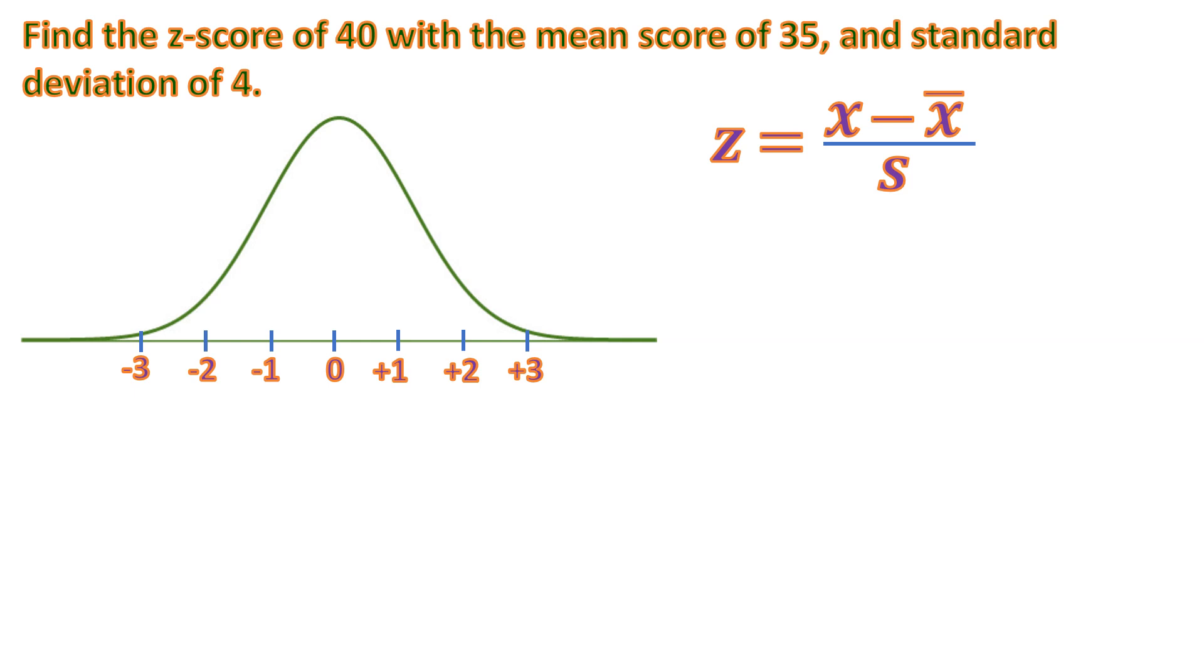If it's population data, the mean will be the mu symbol. I don't know if you have seen the mu symbol, a Greek letter. That's the population mean. And the sigma symbol for standard deviation. That's the population standard deviation. And s is just a sample standard deviation. But anyway, it's the same formula.